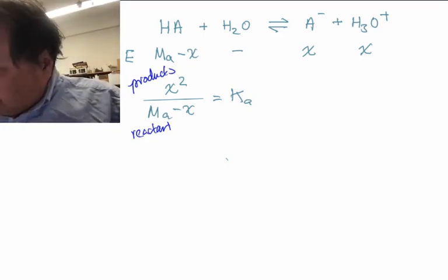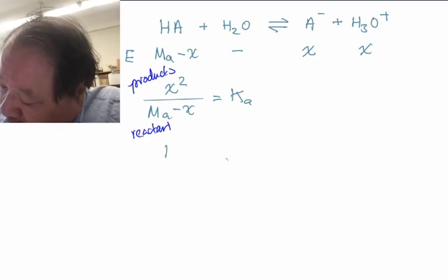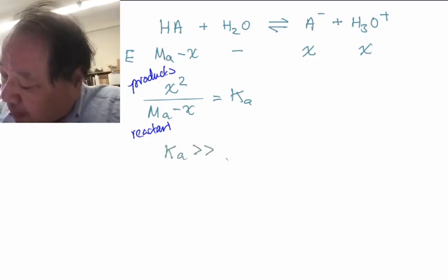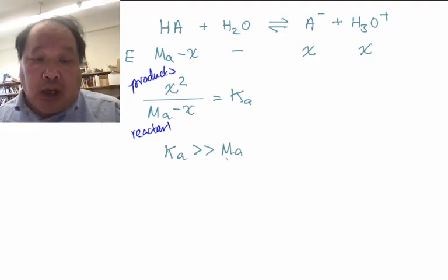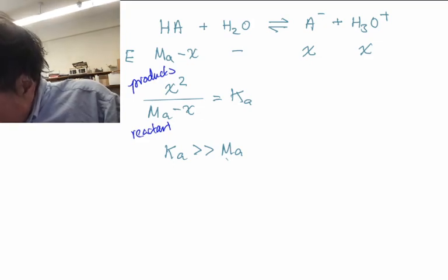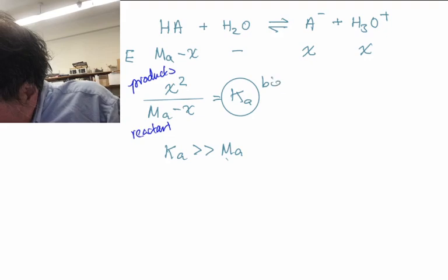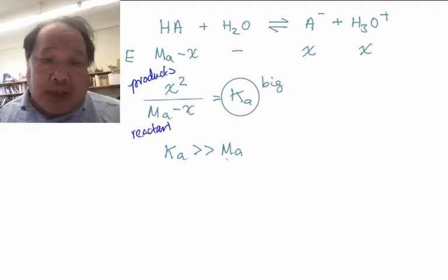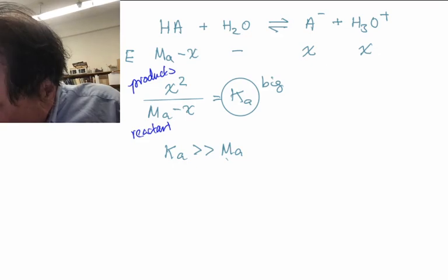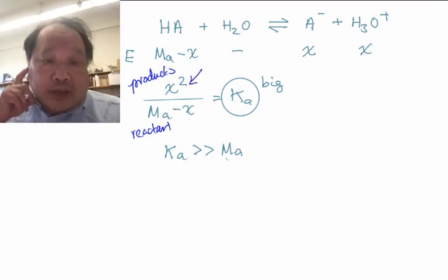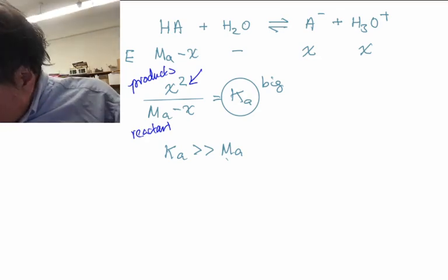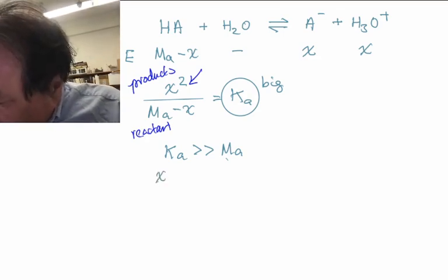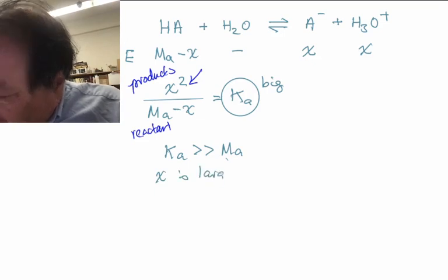We're going to look at the scenario where Ka is much much larger than Ma. In that case, if Ka is a big number, that means there are a lot of products. That's how you can get a big number. And if there's a lot of products, that means X itself will be large because X squared is large, X is large.